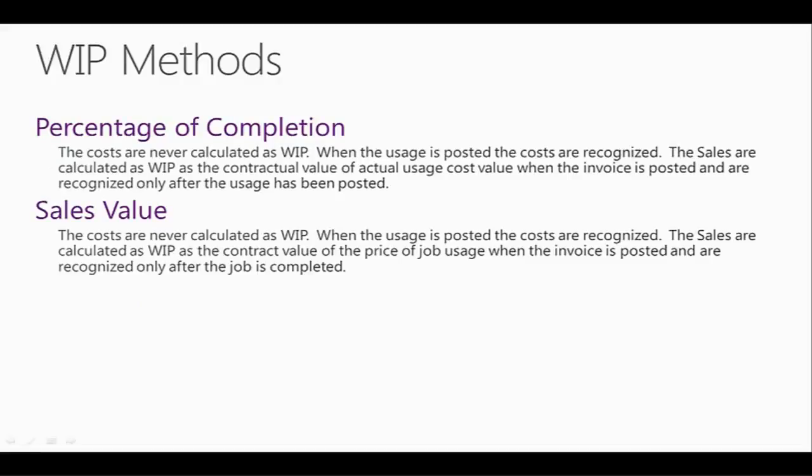Percentage of Completion — the costs are never calculated as WIP. When the usage is posted, the costs are recognized. The sales are calculated as WIP as the contractual value of the actual usage. When the invoice is posted, they are recognized only after the usage has been posted. Sales Value — the costs are never calculated as WIP. When the usage is posted, the costs are recognized. The sales are calculated as WIP as the contract value of the price of the job usage. When the invoice is posted, they are recognized only after the job is complete. These are the already created WIP methods. Please remember that all the calculations are in the online help. These five methods cannot be changed — they can only be excluded from usage.